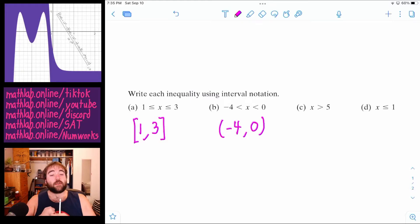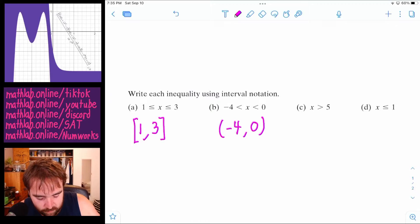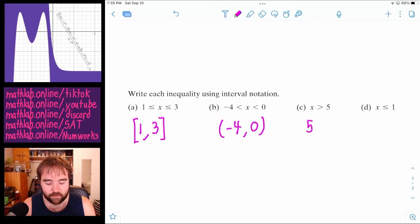So now what about c? So see here, it's just that x has to be bigger than five. So we're going to think about it the same way, we're going to say what's the smallest thing x can be? Five. And then what's the biggest thing x can be?